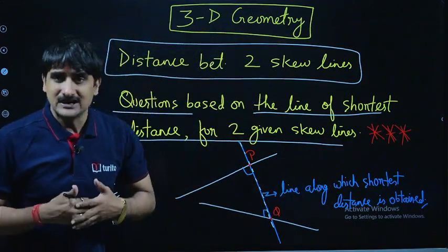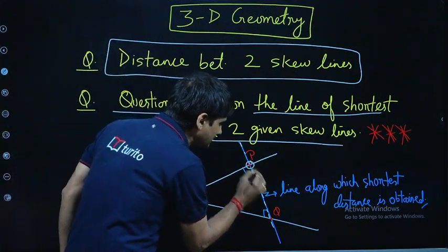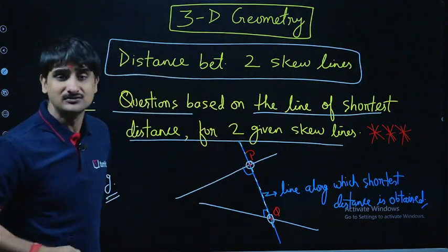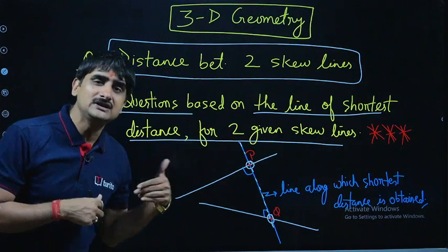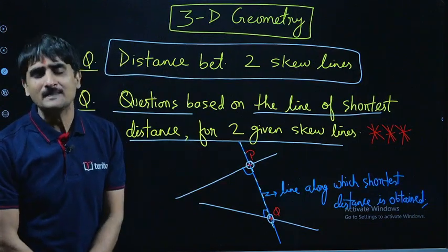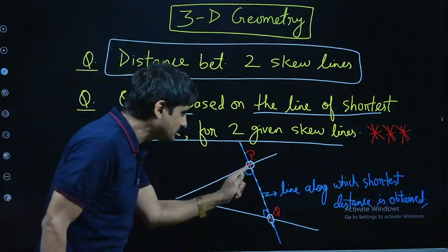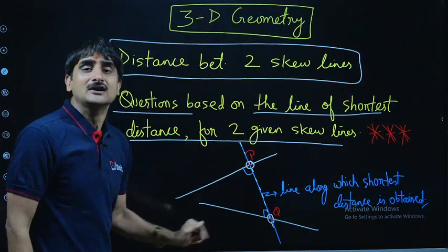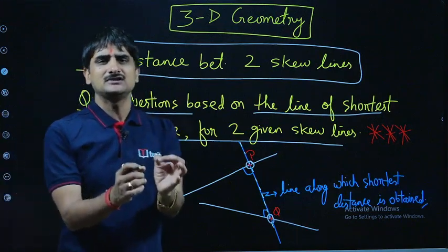The line along which the shortest distance is obtained. What can be the type of question? The type of question can be based on these points of intersection, P and Q, where this line which is perpendicular to both the skew lines, line L1 and L2, intersects. There can be several different types of questions. This is very important - you should be able to get point P, get point Q, and then any question asked based on line PQ you can solve it for sure.